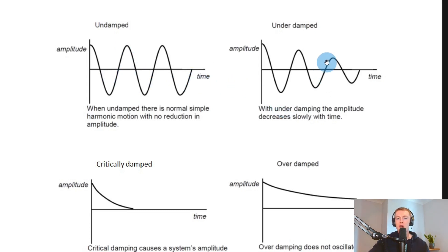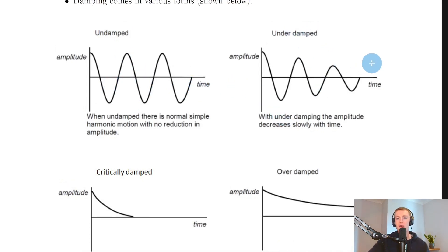Whereas we then have something called an underdamped system, which is a wee bit of damping, where with underdamping, the amplitude decreases slowly with time. So you'll see we start off with this higher amplitude, but then when it reaches back up here, it's lower than it was to begin with, and then even lower than this one, and so on. So we have undamped, a wee bit of damping, and then if we have even more damping, there's something called critical damping.